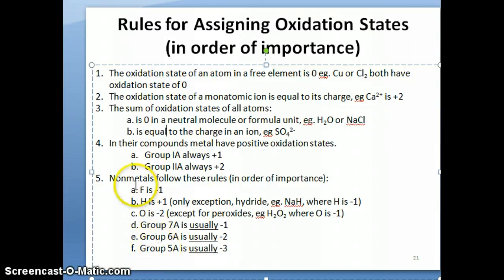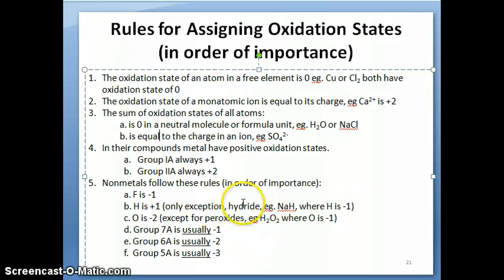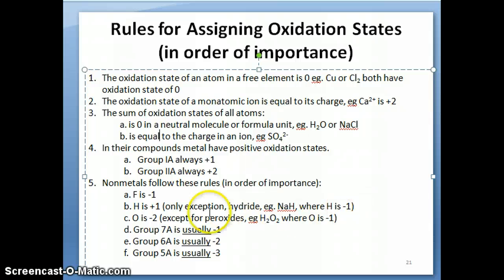For non-metals, it's really important to follow the rules in order of importance from top to bottom. The first non-metal rule: fluorine is always negative one. After fluorine, hydrogen is always plus one. The only exception is when hydrogen forms a compound with a metal — what we call hydrides. In sodium hydride, for example, sodium is plus one, so hydrogen has to be negative one in order for the sum to equal zero.